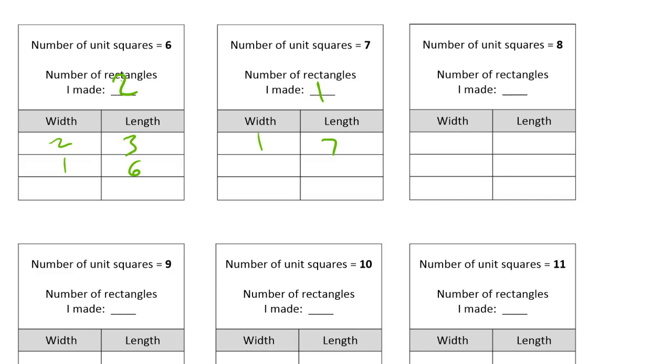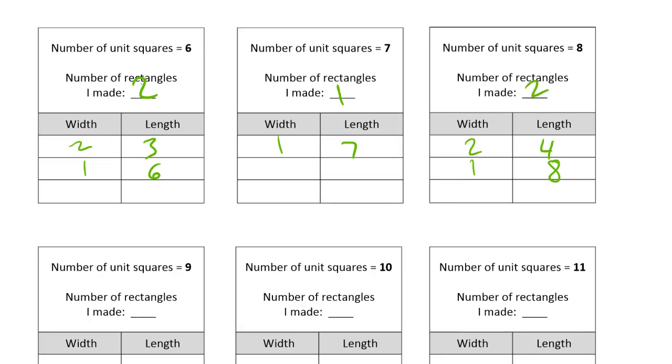And if you have eight squares, you can have two by four. Of course you can have one by eight. Let me clean these up so I can have some more room. And let me see, are there any others? That's it. So that's two rectangles.